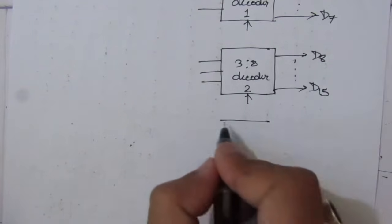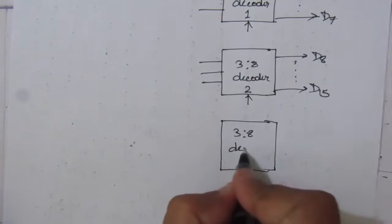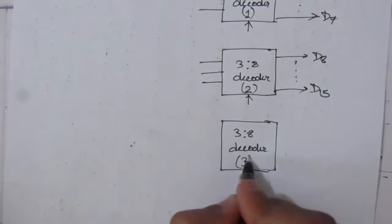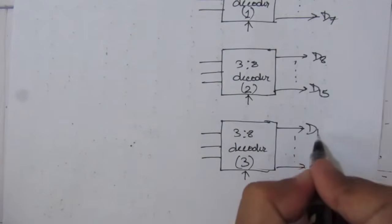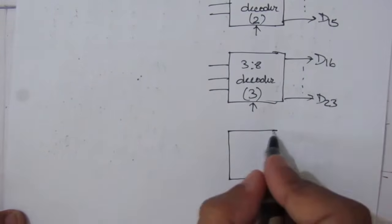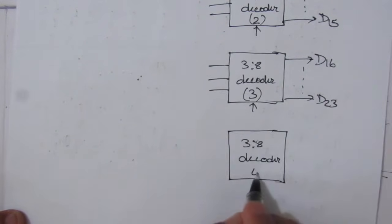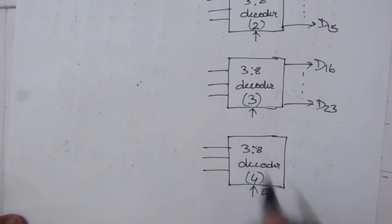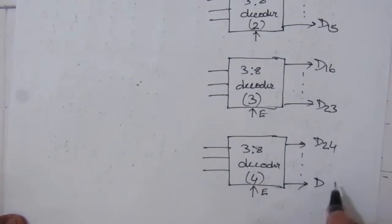The third decoder is a 3-to-8 decoder — decoder number 3 — with 3 input lines, 1 enable input, and 8 output lines giving D16 to D23. We also have a fourth 3-to-8 decoder — decoder number 4 — with 3 input lines, 1 enable input, and output lines D24 to D31.